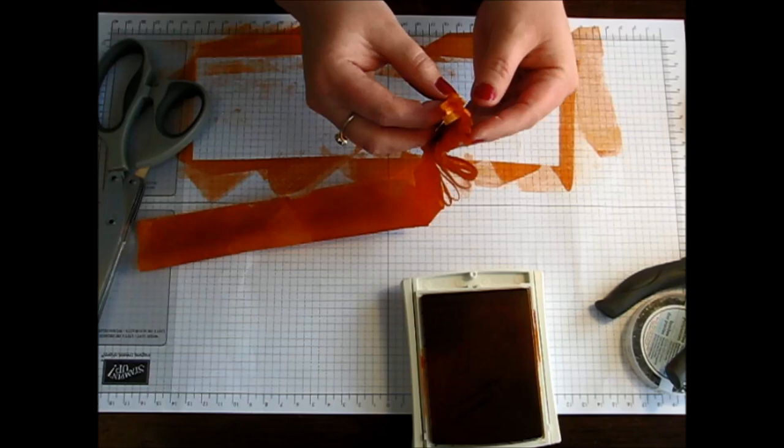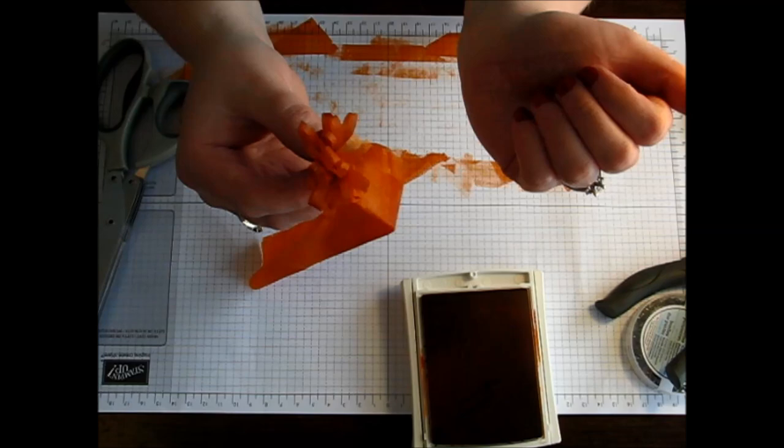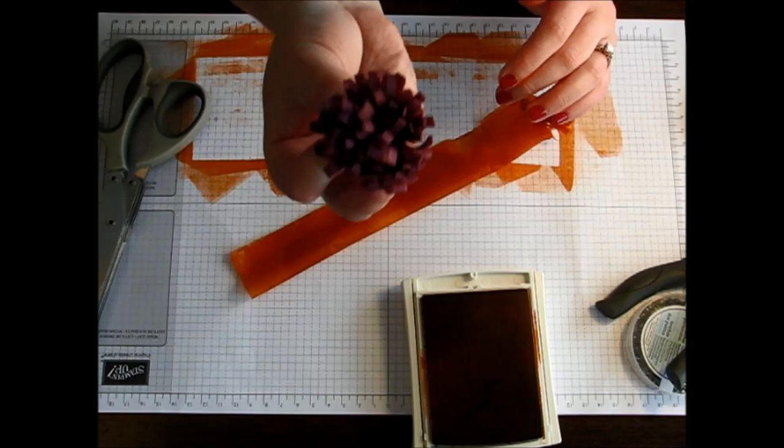What you'll do is you'll just start rolling this in and that sticky strip or fast fuse will stick to itself and hold this flower together. You'll roll it all the way to the end and that's how you get that amazing loop flower there.